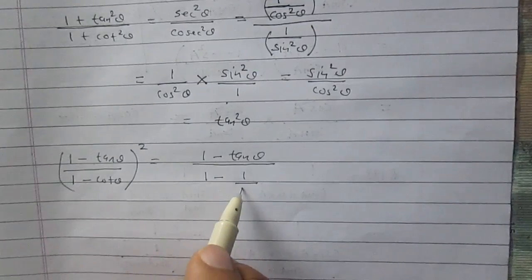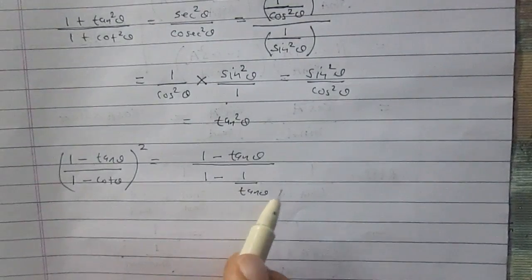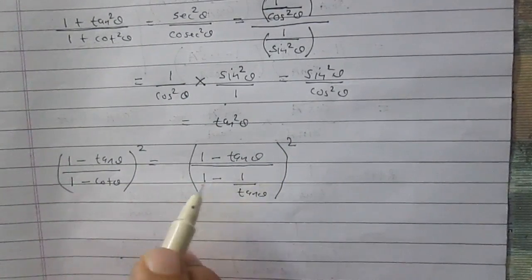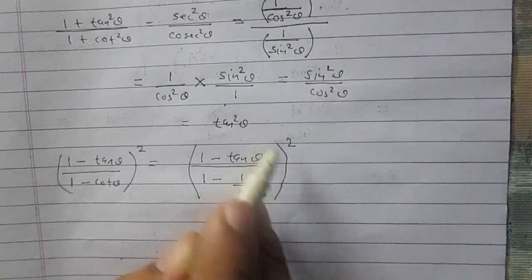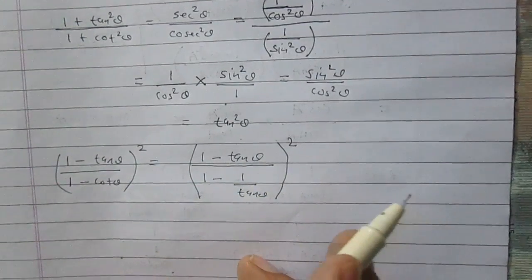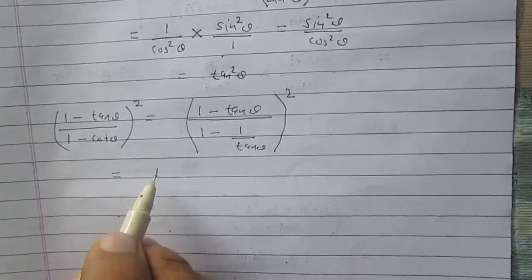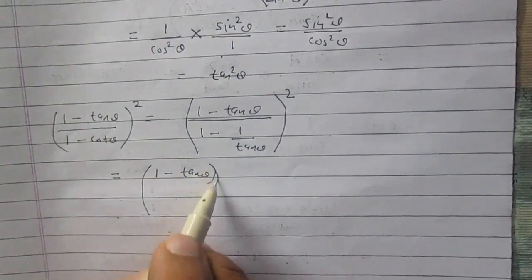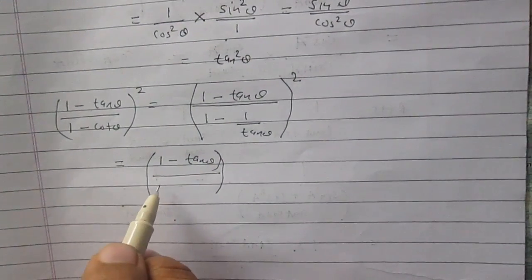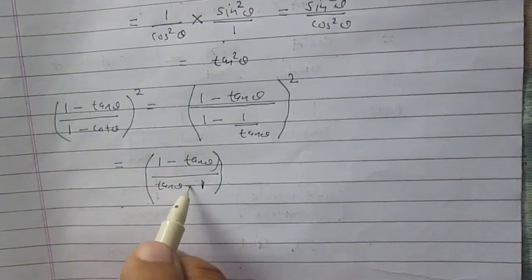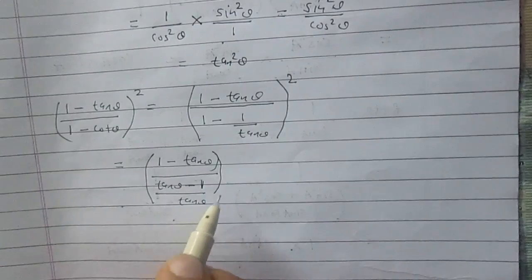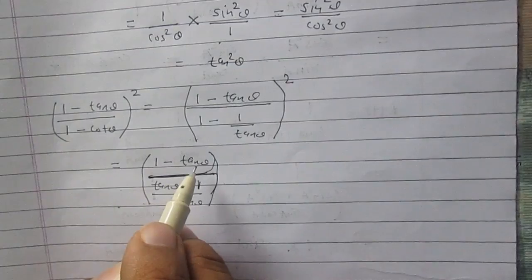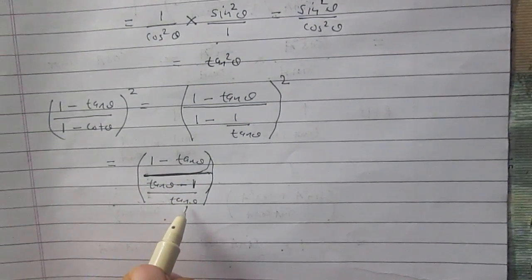So I can write cotθ as 1 / tanθ. The expression becomes [(1 - tanθ) / (1 - 1/tanθ)]². You can simplify it: the numerator is as it is (1 - tanθ), and the denominator becomes (tanθ - 1) / tanθ. So the numerator is (1 - tanθ) and the denominator is (tanθ - 1) / tanθ.